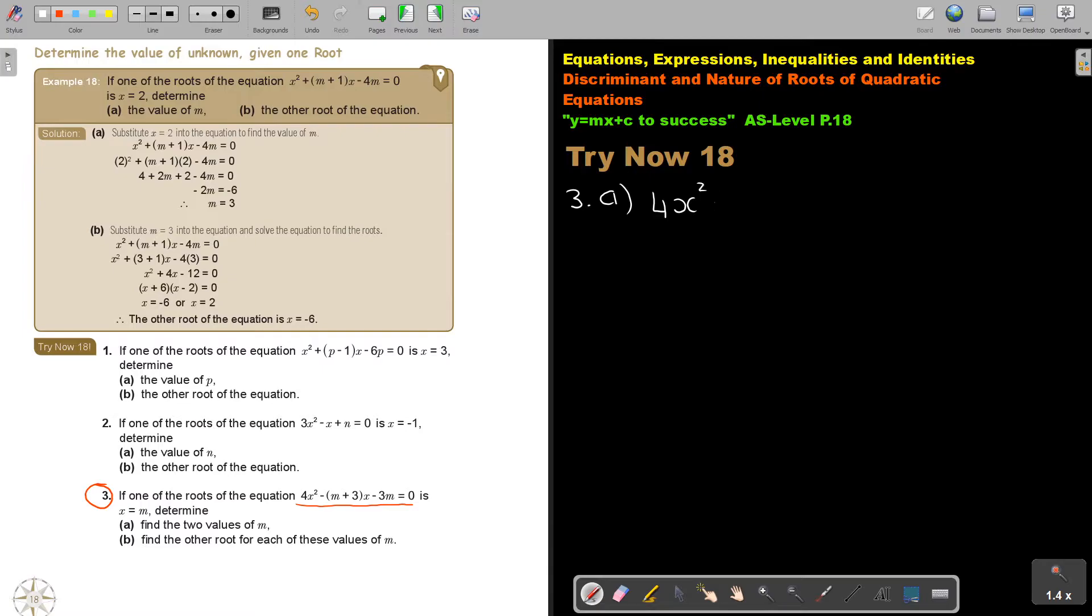So it's going to be 4 x squared minus m plus 3 x minus 3 m is equal to 0. So if one of them is m, I'm just going to substitute in the place of x, m. Now concentrating a little bit. So here I will put m in. Instead of I was putting always the values in. Now I just put m in. So it's going to be 4 m squared minus m times m plus 3 times m minus 3 m equals 0. This is negative. It's negative m times m. So it's negative m squared. This is going to be negative m times 3. So it's negative 3 m minus 3 m equals 0.